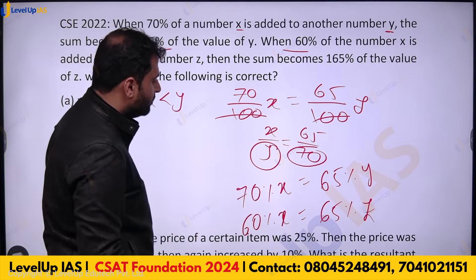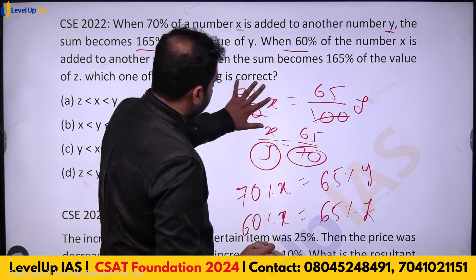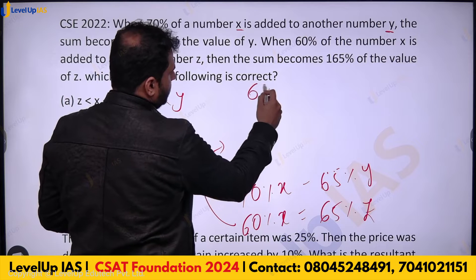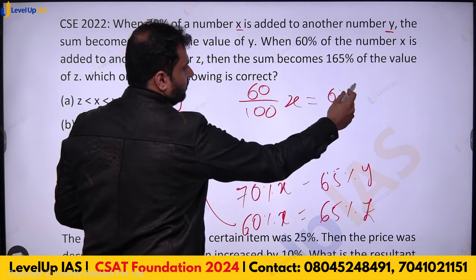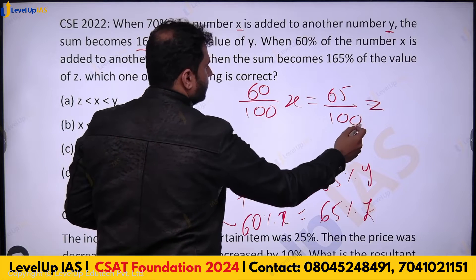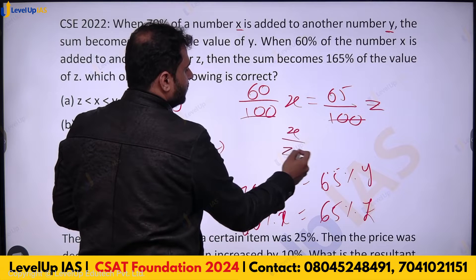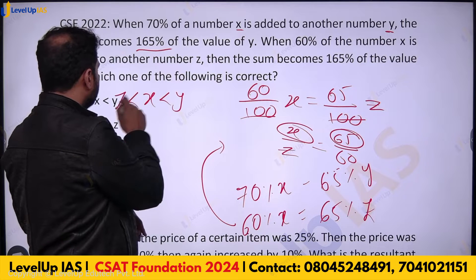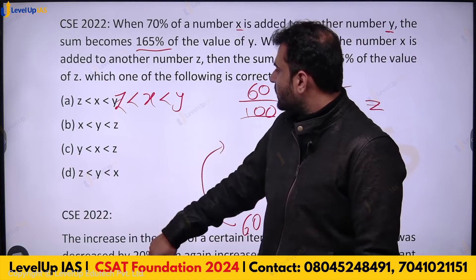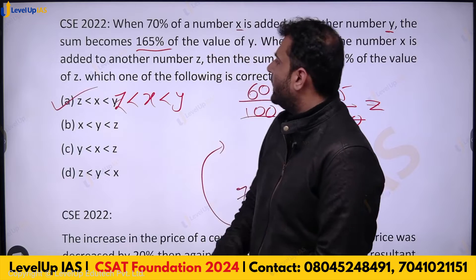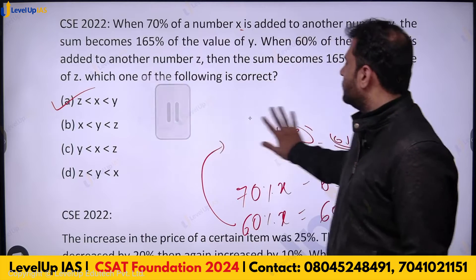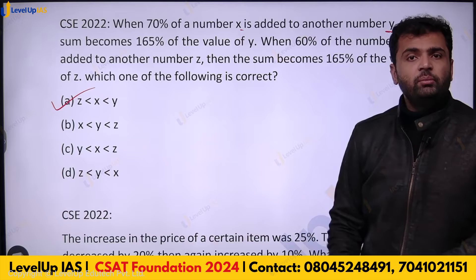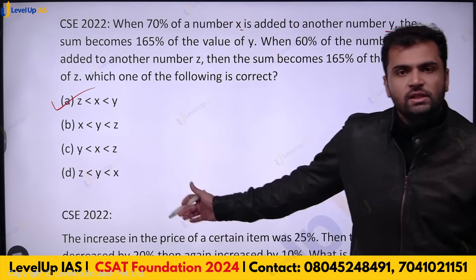Similarly, from the second equation: 60/100 × x = 65/100 × z, so x/z = 65/60, meaning x is bigger than z. Therefore z < x < y. The answer is very simple — all you needed to do was write down the word problem as equations and then simplify.